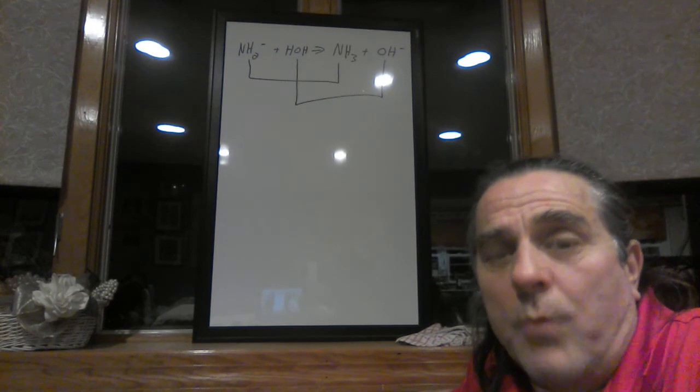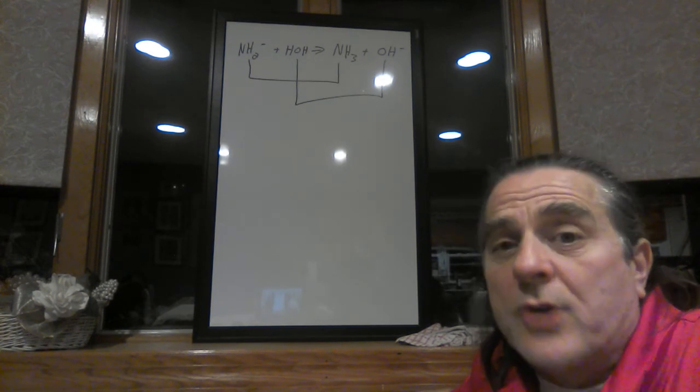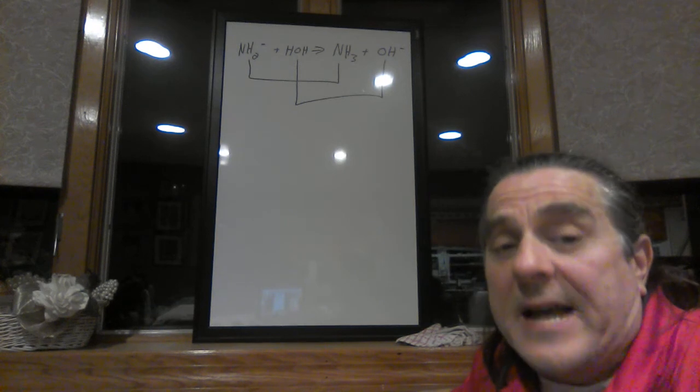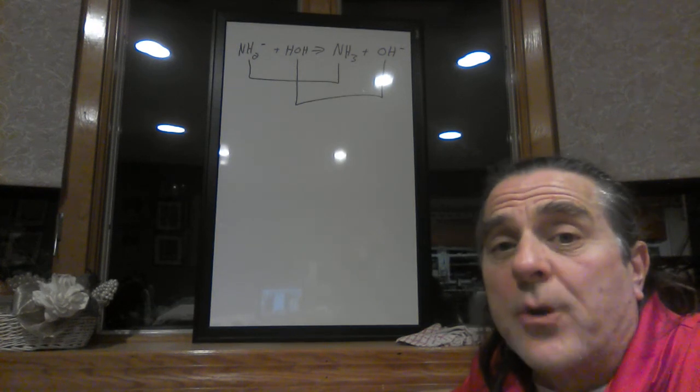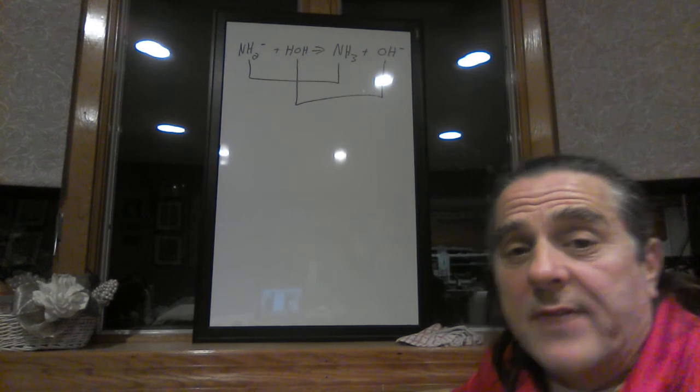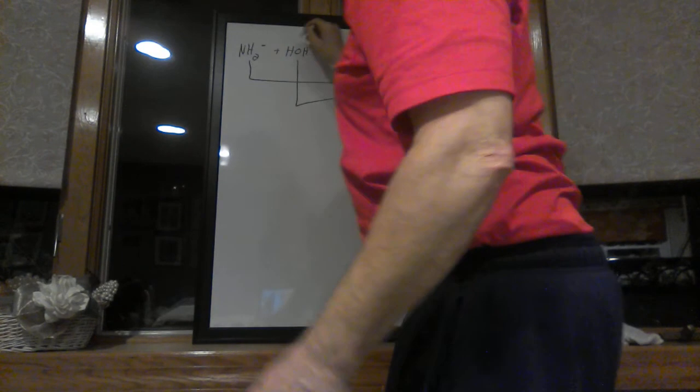The easiest thing to do is when you're looking at the pair, whichever one has more H's, that's the one that's going to be the acid. So if I look at my lasts, which is the HOH and the OH, the HOH is the acid, the OH negative is the base. So I'm going to label that.